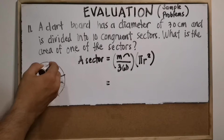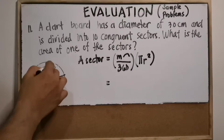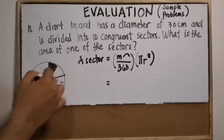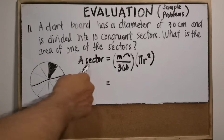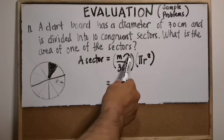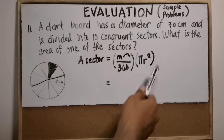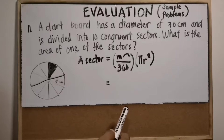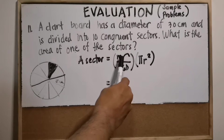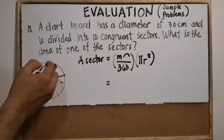What is the area of one of the sectors? To solve that, we use this formula: the area of a sector is equal to the measure of the arc over 360, times pi r squared. First, let's solve for the measure of the arc.